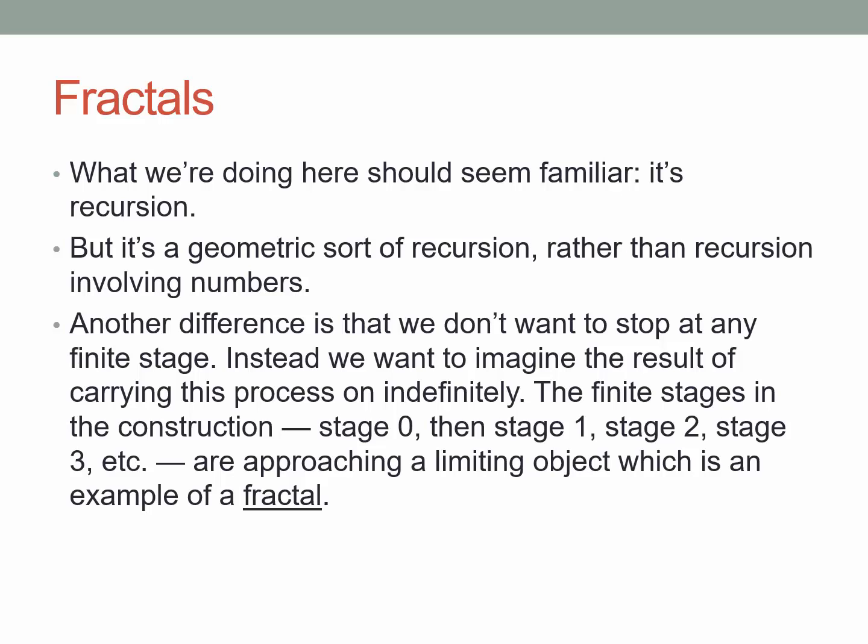But earlier in the course, when we did a recursion, we were creating a sequence of numbers, and here we're doing this in a geometric way. That is to say, rather than generating a sequence of numbers where each number depends in some way on the preceding numbers in the sequence, we're creating a sequence of geometric objects where each geometric object is obtained from the previous one by some sort of process. We've seen that in both examples thus far — both the Koch curve and snowflake, and also in the example of the Sierpinski triangle.